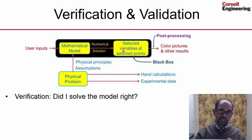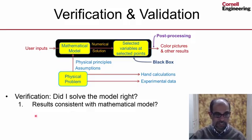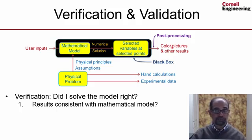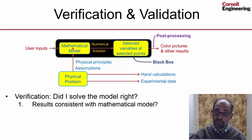And there are three categories of checks that one can do. The first is to check if the results are consistent with the mathematical model. So for instance, results in the color pictures are consistent with the mathematical model. The behavior at the boundaries, is it consistent with the boundary conditions in the mathematical model?